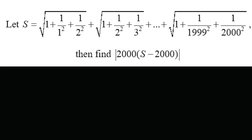The series S is given as the sum of terms: √(1 + 1/1² + 1/2²) + √(1 + 1/2² + 1/3²) + ... up to √(1 + 1/199² + 1/200²). We need to find the value of |2000·S − 2000|.